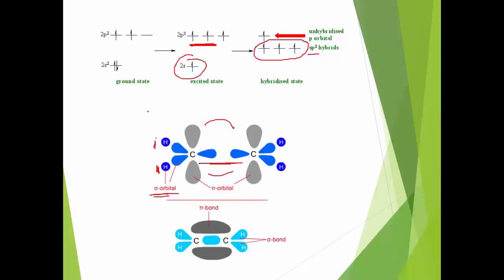Or when an s orbital and a p orbital, they will overlap head-on, there will be a sigma bond. Whereas, when the overlap is sidewise...